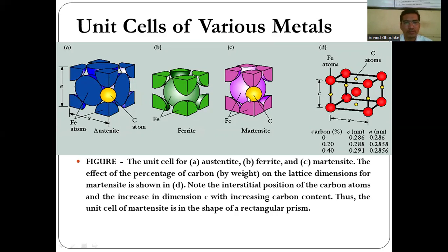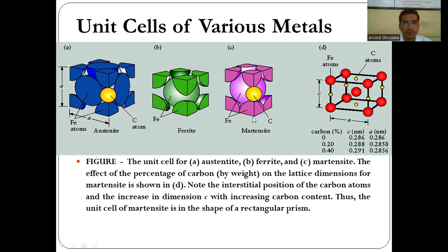The third unit cell is martensite. Here you can observe the martensitic phase. It is again a combination of iron and carbon. The iron (ferrous) atoms are located on the corners of the unit cell as well as at the interior of the unit cell, and carbon atoms are present in the interstitial spaces of the iron atoms. This is the unit cell for the martensitic structure.